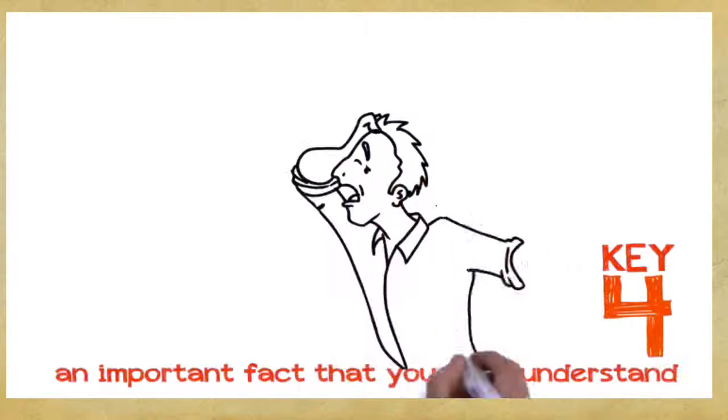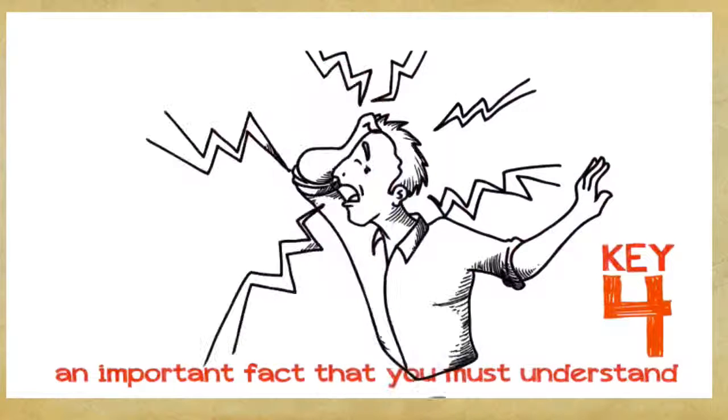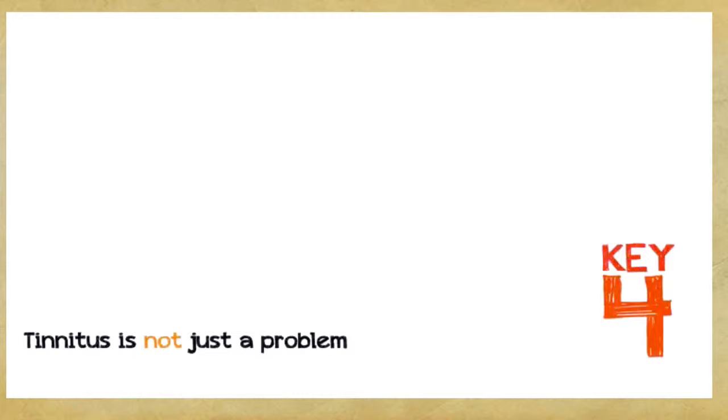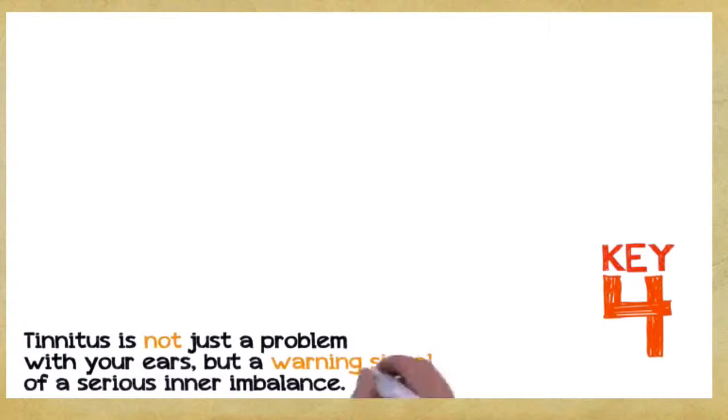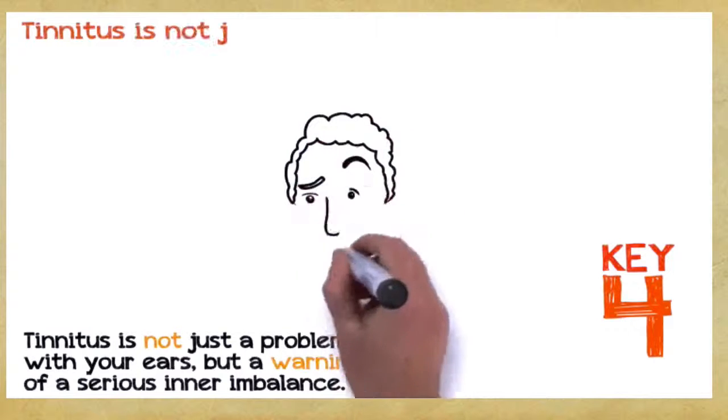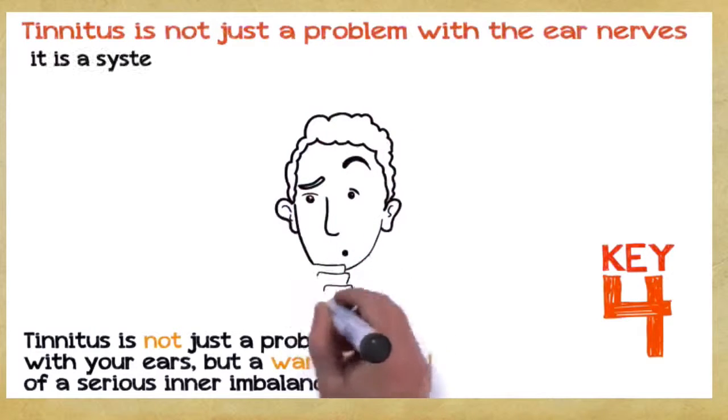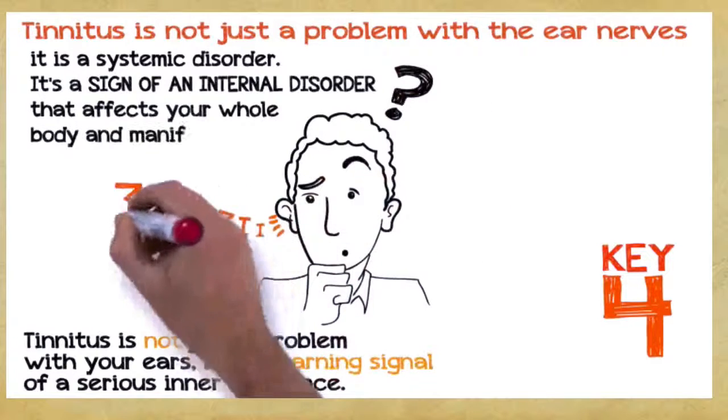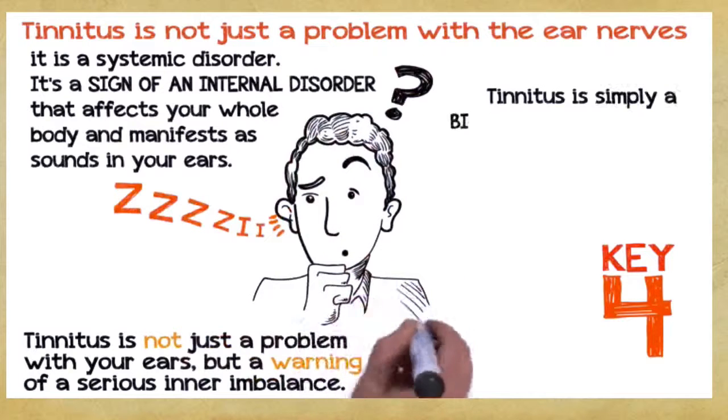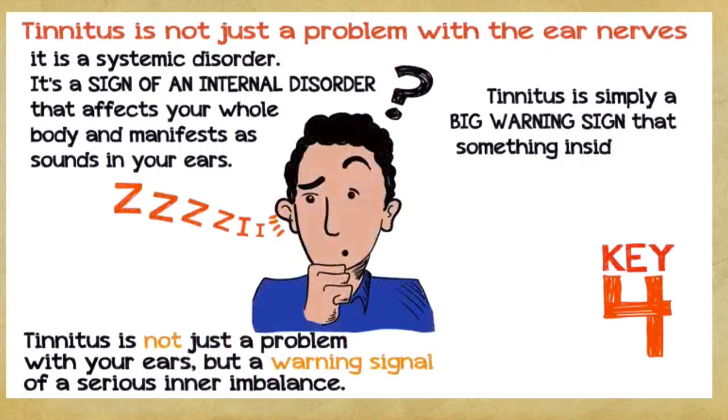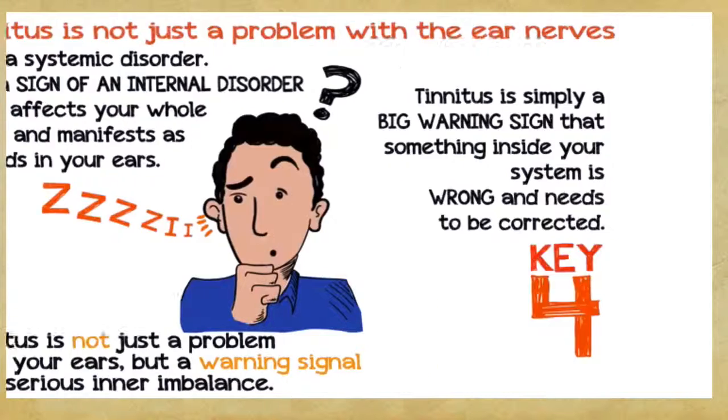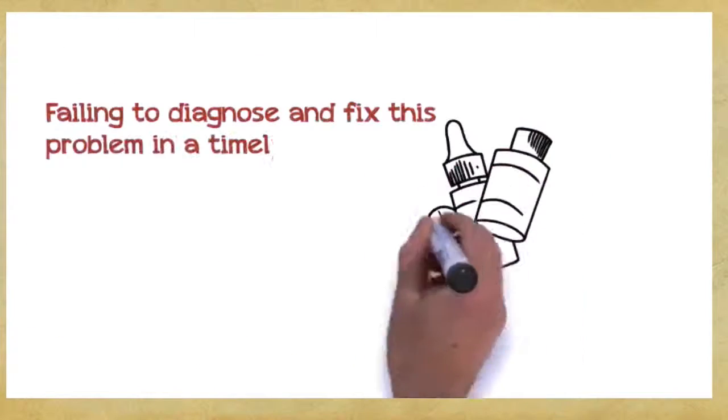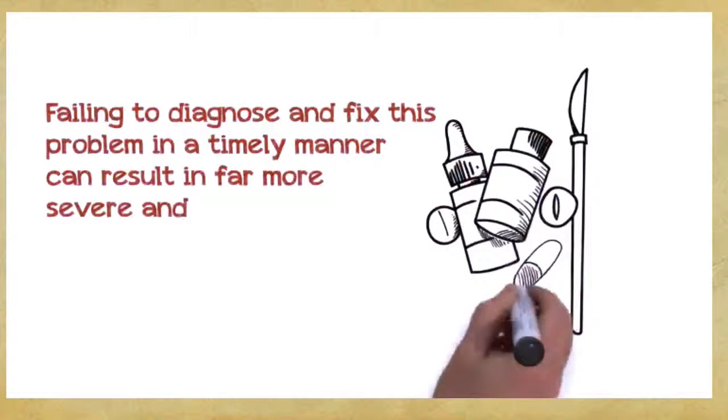Key number four. This is a very important fact that you absolutely must understand if you want to save hundreds or even thousands of dollars. Tinnitus is not just a problem with your ears, but a warning signal of a serious inner imbalance. In the vast majority of cases, tinnitus is not just a problem with the ear nerves, it's a systemic disorder. It's a sign of an internal disorder that affects your whole body and manifests as sounds in your ears. Tinnitus is simply a big warning sign that something inside your system is wrong and needs to be corrected.